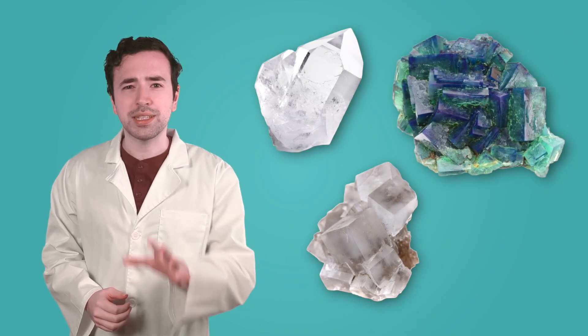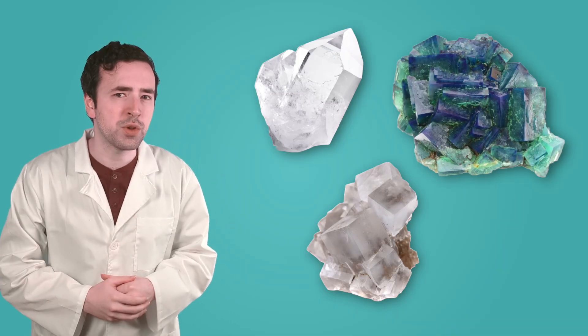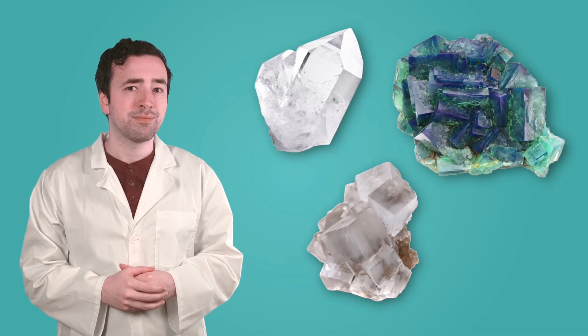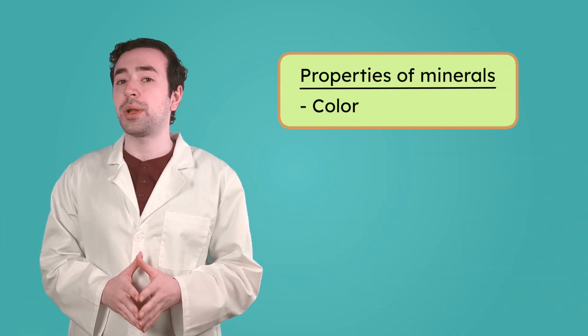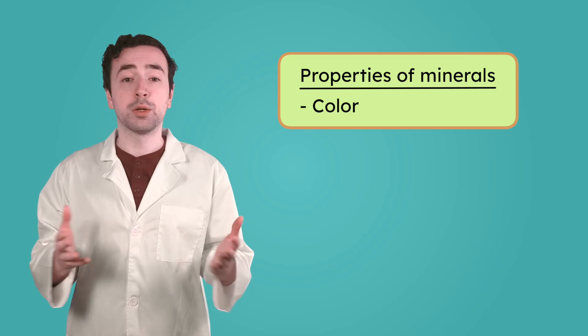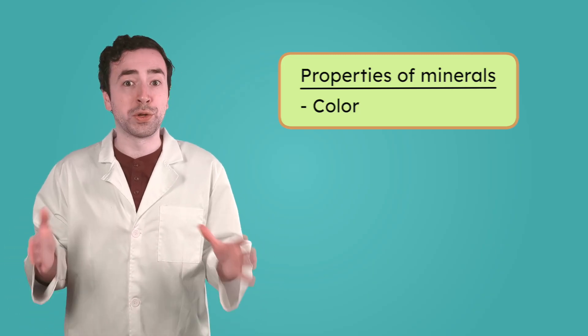Now we know the rocks I found are actually minerals — but that's totally fine. I could just make a really cool mineral collection instead. But how do I figure out what minerals they are so I can label my collection? Let's see what we can observe. Color is one property of minerals that can be used to identify them. Minerals come in all sorts of colors, like green, purple, or even gold.